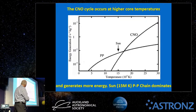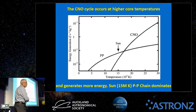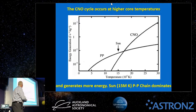A plot of energy generation via each mechanism against stellar core temperature shows that as stars get hotter, they increasingly use the CNO cycle. Our sun sits at one solar mass and relies predominantly on the proton-proton chain. At about 1.3 solar masses, the CNO cycle starts to become more dominant.